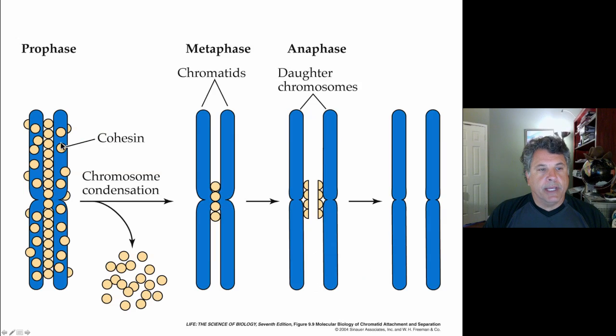So let's look at that a little bit here. In prophase we have cohesin distributed uniformly between the chromatids. And as chromatin condensation occurs during the phase of prophase, most of those cohesin proteins are removed but there remain cohesin proteins near the centromeric region of the chromatids.